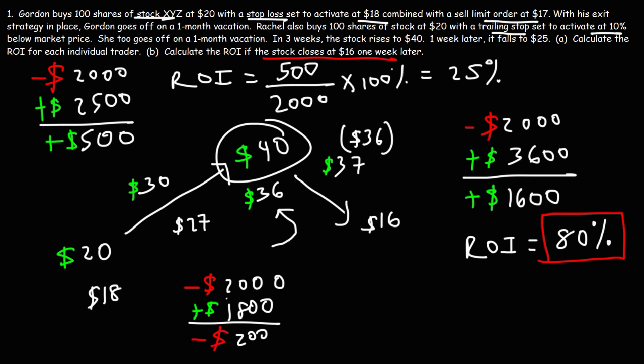But because he took a vacation, he wasn't there to sell his shares. Gordon is looking at a 10% loss all because he didn't have one of the best exit strategies. His exit strategy was good enough to protect him from excessive losses - he could have sold his stock at $16 instead of $18. But it didn't allow him to participate in the gains of the stock when it moved in the right direction.